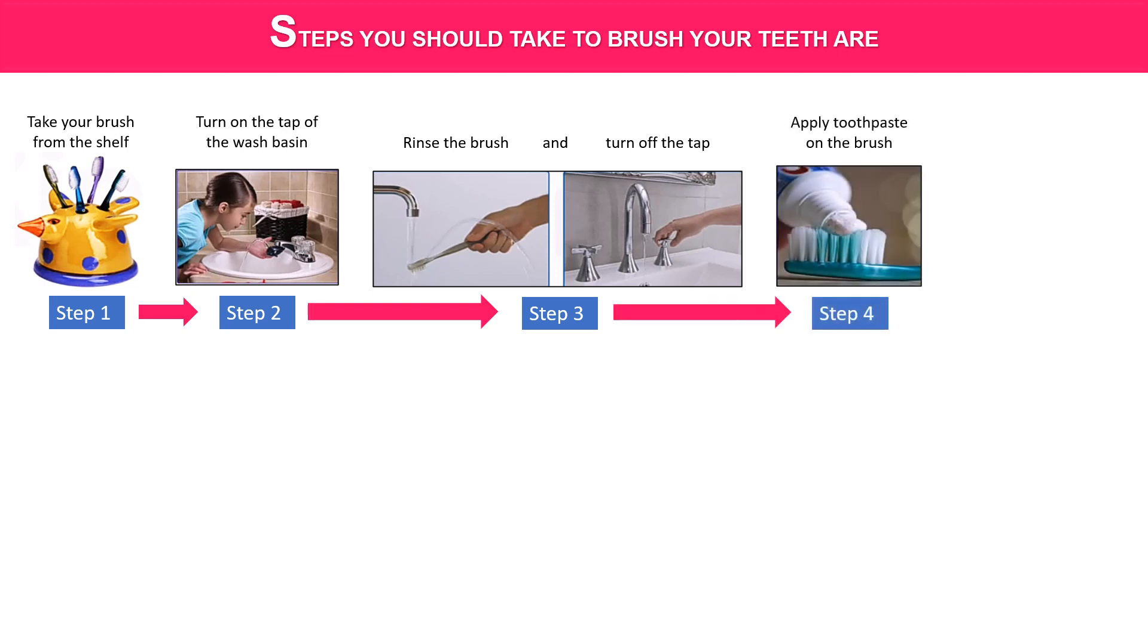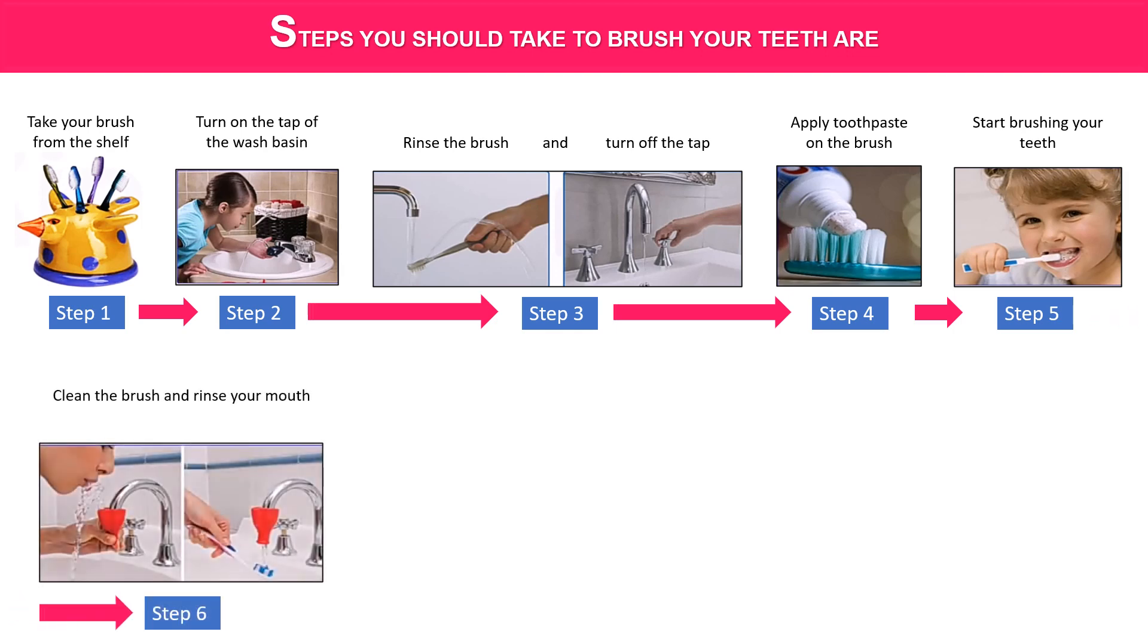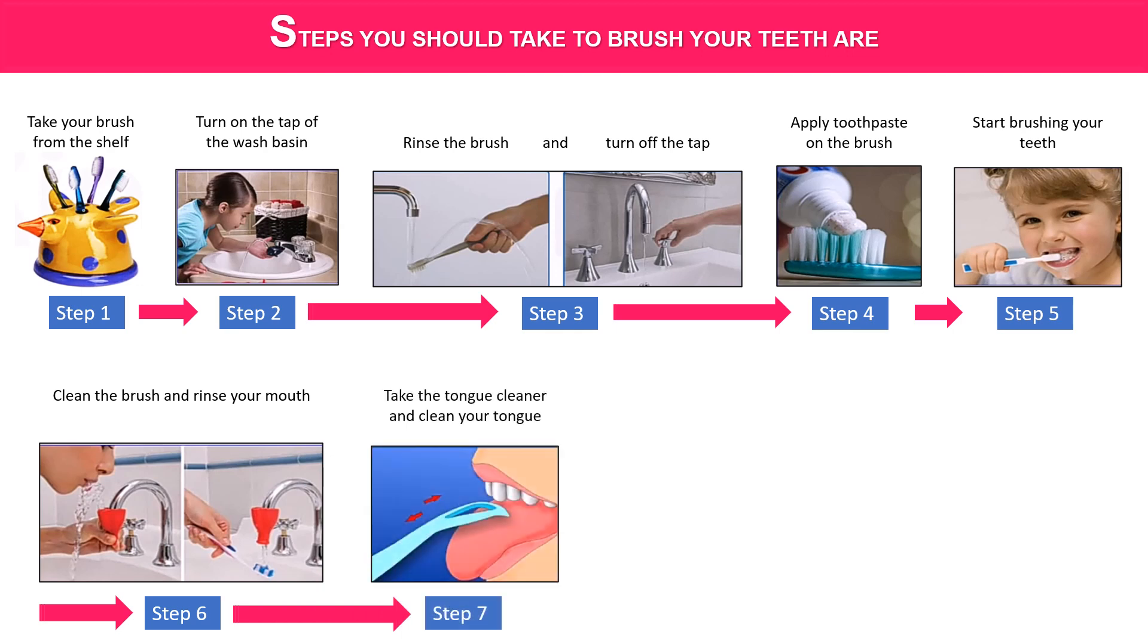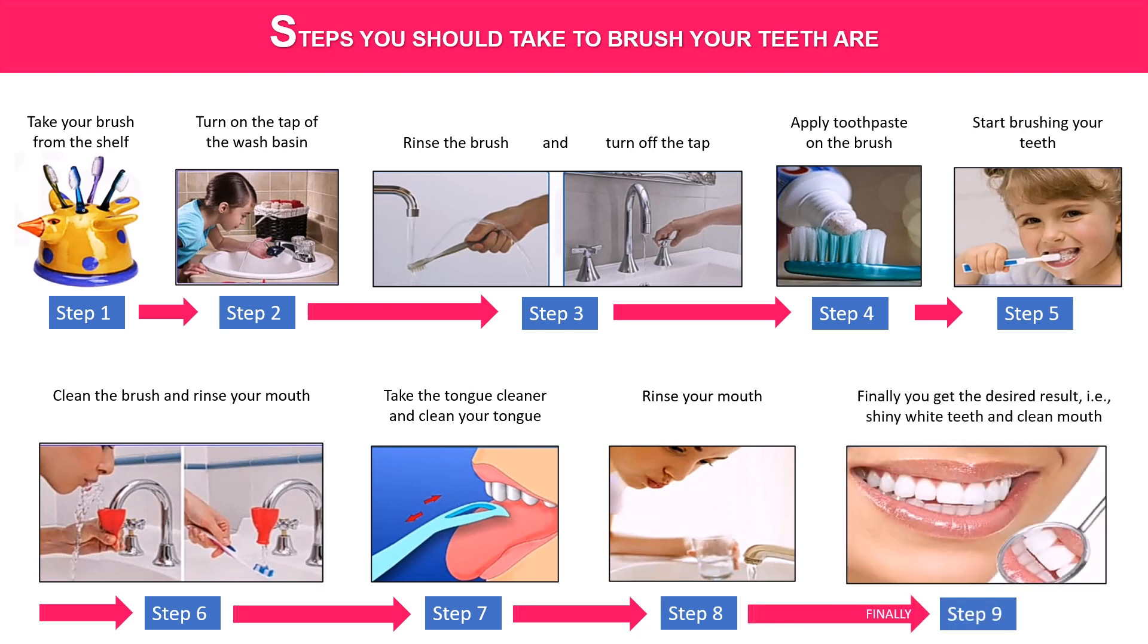Next apply toothpaste on the brush. Step 5: start brushing your teeth. Step 6: clean the brush and rinse your mouth. Then take the tongue cleaner and clean your tongue. Once again rinse your mouth and finally you get the desired result - shiny white teeth and clean mouth.